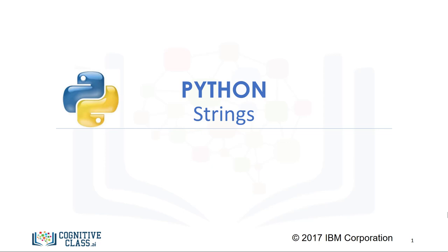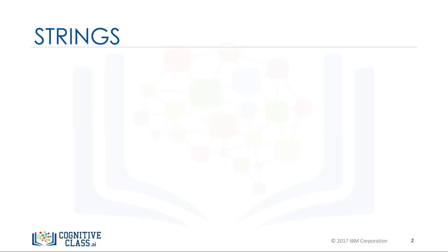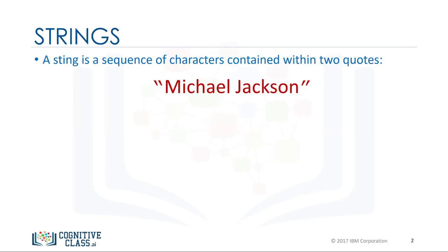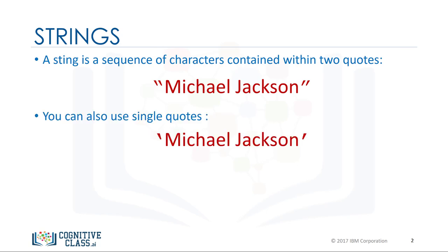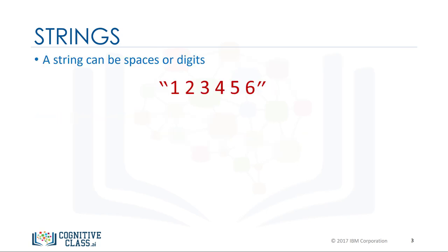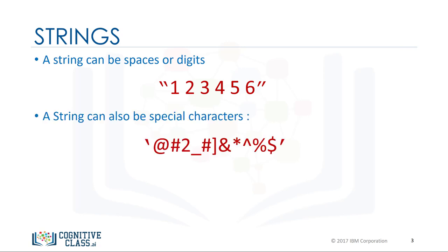In Python, a string is a sequence of characters. A string is contained within two quotes. You could also use single quotes. A string can be spaces or digits. A string can also be special characters.